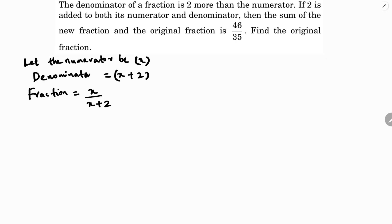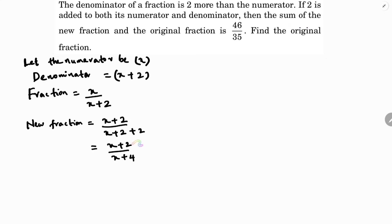If 2 is added to both numerator and denominator, the new fraction will be: numerator becomes x plus 2, denominator becomes x plus 2 plus 2, so the new fraction is (x+2) by (x+4). The sum of the new fraction and the original fraction equals 46/35.